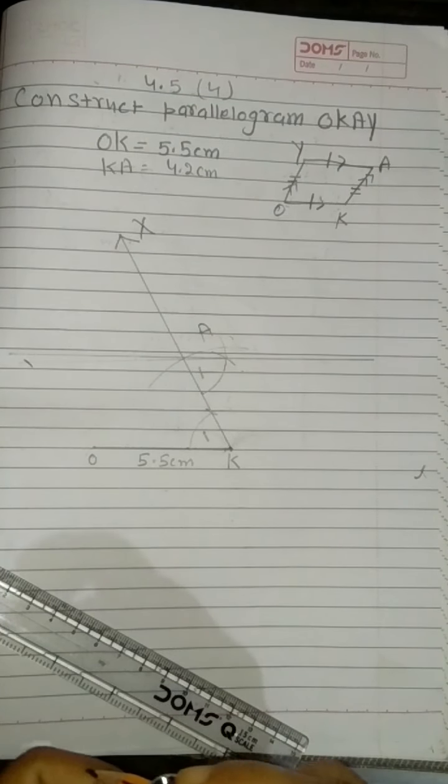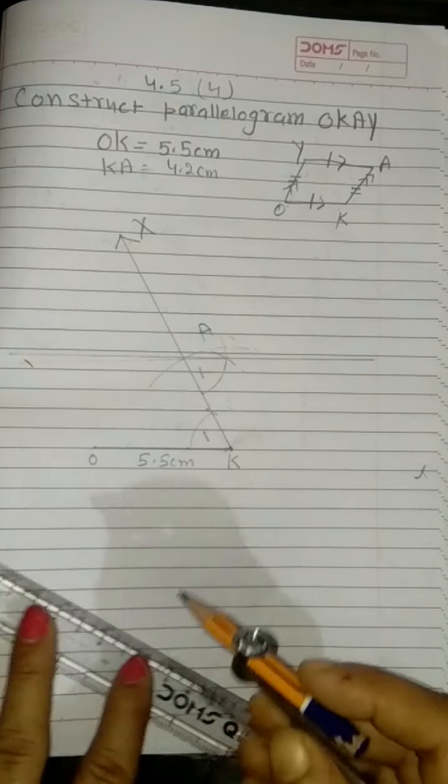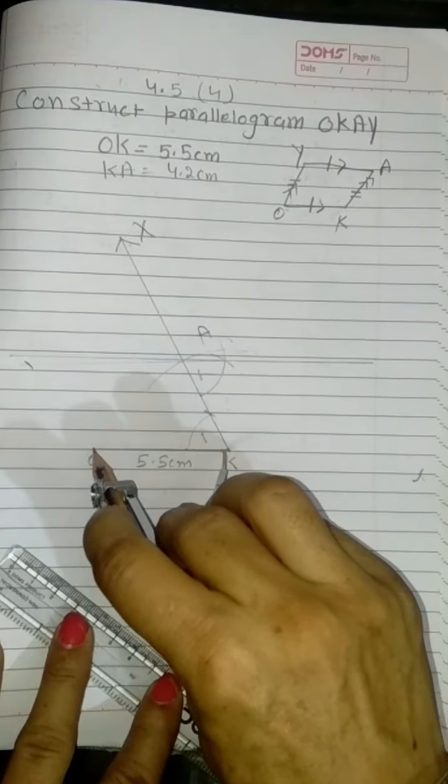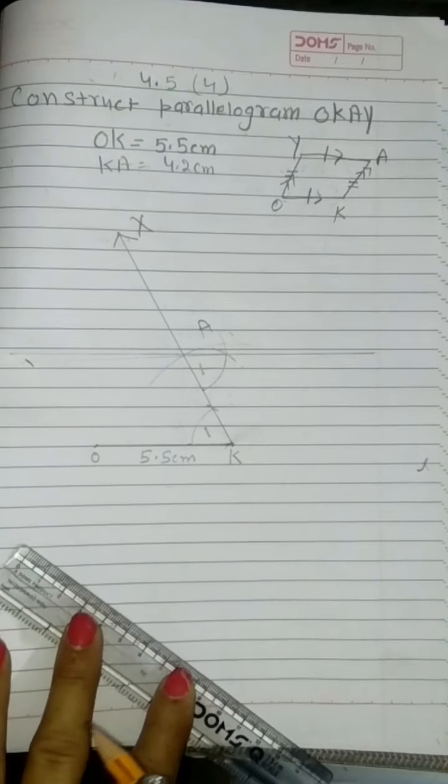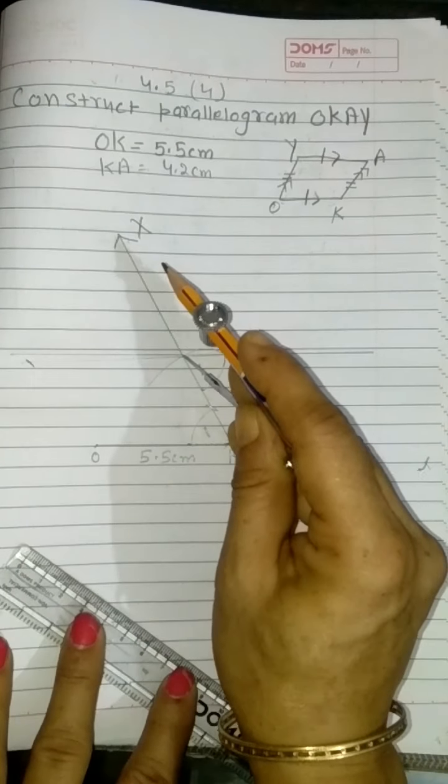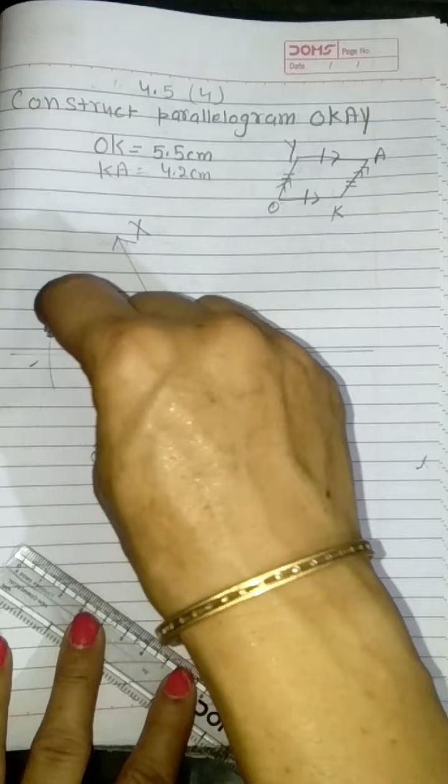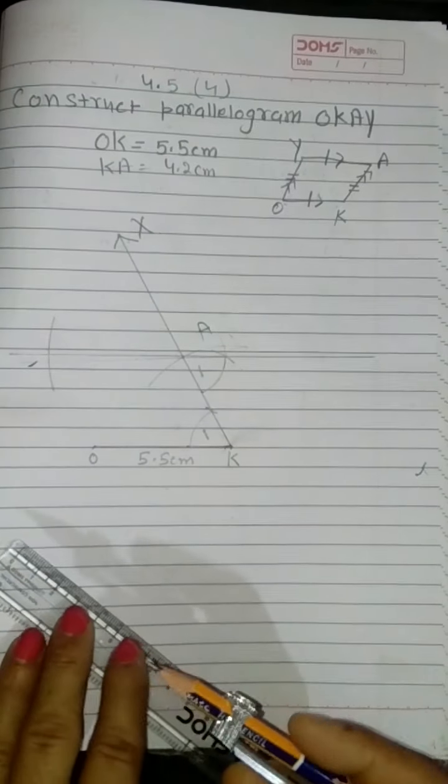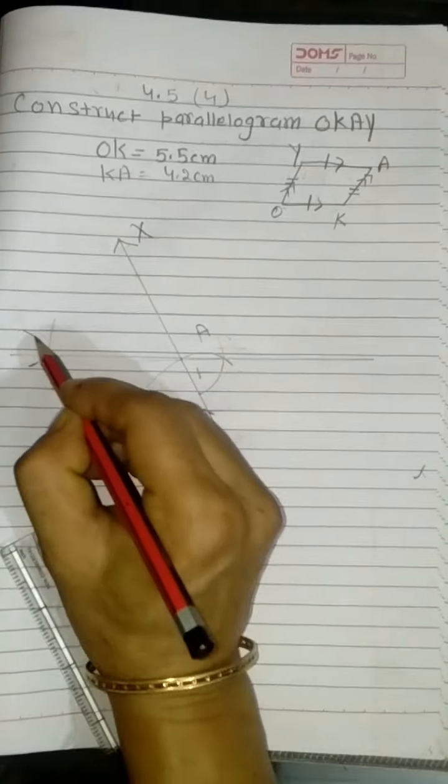Now what I will do: With radius equal to 5.5 cm, A as the center, draw an arc of 5.5 cm. In this way I locate point Y.